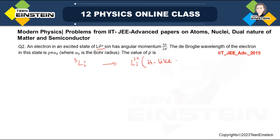For hydrogen-like atoms, the energy expression will be −13.6 × Z²/n² eV. The Bohr orbit radius for hydrogen is a₀n², but for hydrogen-like atoms we write the radius as a₀n²/Z, where a₀ is the Bohr radius. These are the formulas we need to remember. Hydrogen atom has only one electron in the outer orbit, and hydrogen-like ions such as He⁺ or Li²⁺ can also behave as hydrogen-like atoms.